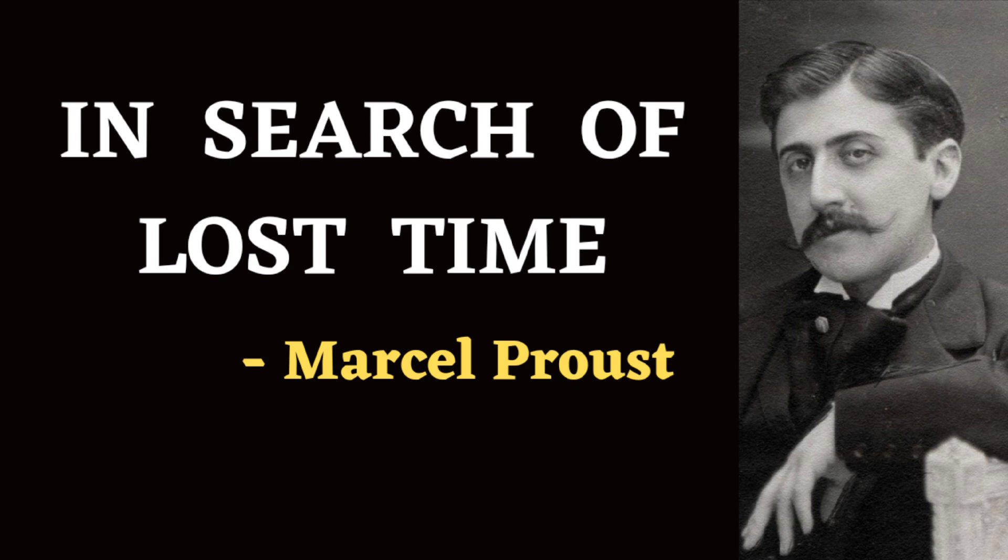From unrequited teenage crushes to complex adult relationships, the novel delves into the complexities of love, desire, jealousy and obsession. Characters navigate passion, possessiveness and infidelity, revealing the multifaceted nature of human consciousness. Proust also explores class and society — set in late 19th century France, the novel portrays the rigid societal hierarchy and its impacts on individuals, with the narrator observing class distinctions and their influence on behavior, aspirations and even love choices. The fifth theme is the nature of art: throughout the novel, the narrator contemplates the power of art to capture and preserve experiences, with his own journey culminating in a commitment to writing, highlighting art's potential to immortalize and give meaning to fleeting moments.